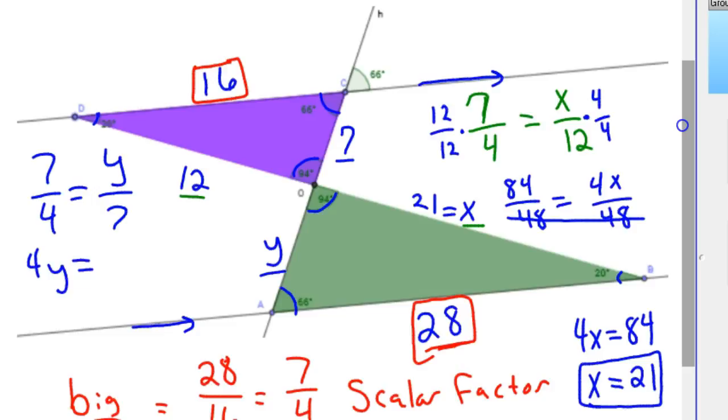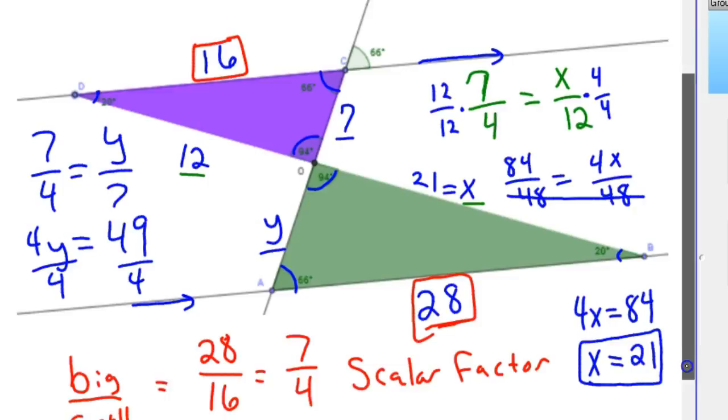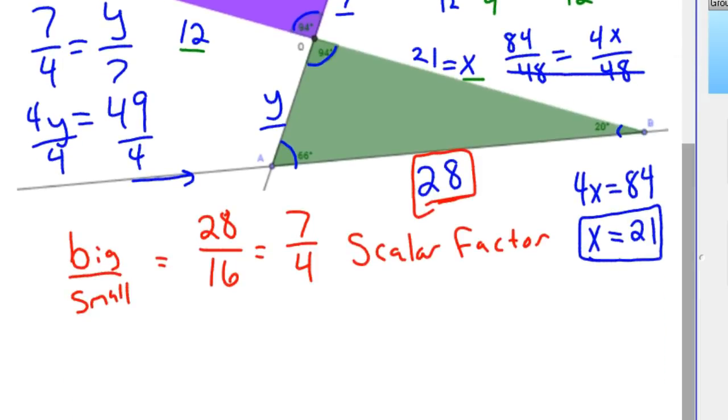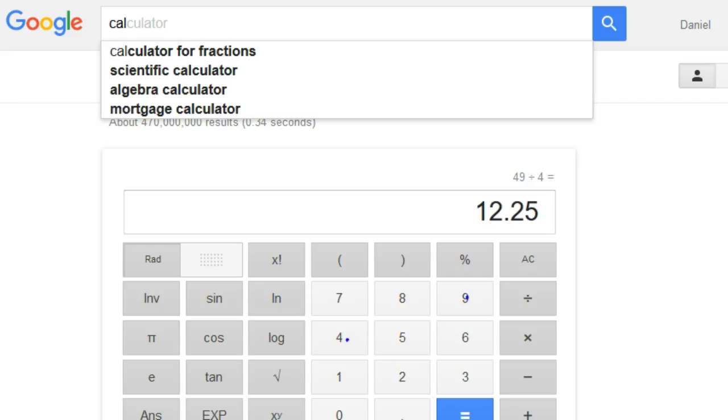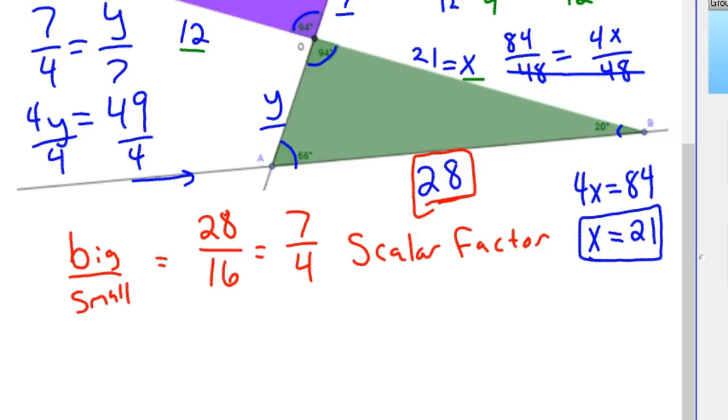You want to be careful with cross-multiplying because then you have a tendency of doing it all the time. It's better to do common denominators. So 4y equals 49. And so then you divide by 4. And so y is 49 divided by 4. I'll go ahead and just pull that up. 49 divided by 4 is 12.25. And so 12.25 is my side y.